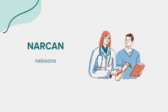Narcan, or Naloxone, is a medication administered to rapidly reverse opioid overdose. Available as a nasal spray or injectable solution, Naloxone works by binding to opioid receptors in the brain, effectively blocking the effects of opioid drugs. This can quickly restore normal respiration to a person whose breathing has slowed or stopped as a result of overdosing with heroin or prescription opioid medications. Narcan is an essential tool in emergency situations and has become increasingly available to the public and first responders.